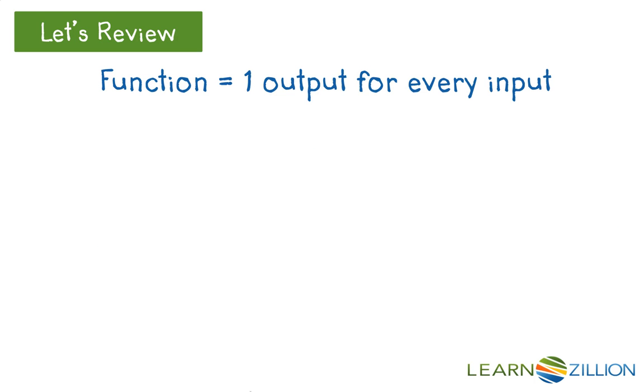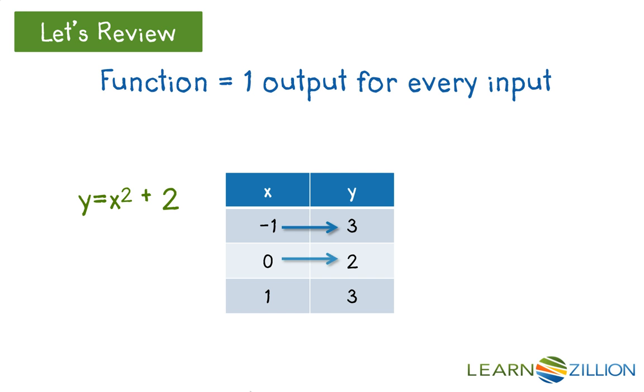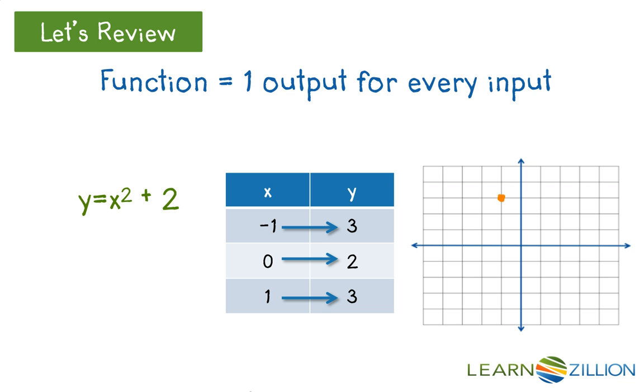Let's review. A function is a relationship between numbers where there's only one output for every input, and you can express the same function in three different ways: an equation, a table, and a graph. And you'll see that with each format, each input only has one output, and this is the only requirement for a function.